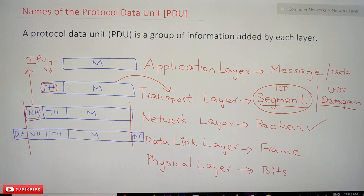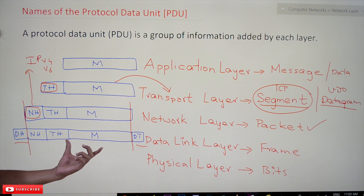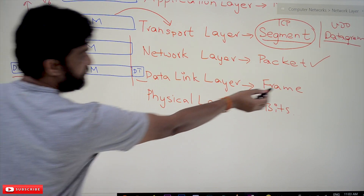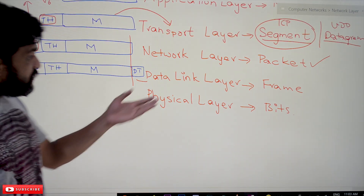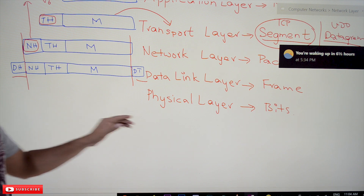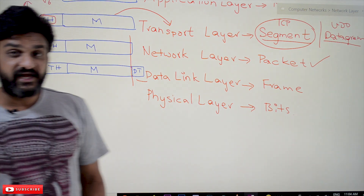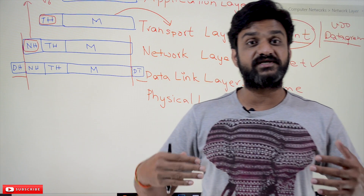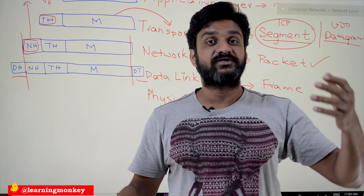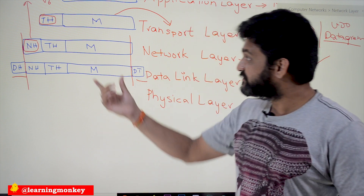This packet is transferred to the data link layer, where the data link layer header and tail get added. The name of the PDU at this layer is called a frame. Then this entire PDU is transferred to the physical layer, where it is called bits — the raw bits that get transferred at the physical layer. These names — message, segment, packet, frame, bits — are very important to remember, as we will use this terminology in further concepts.